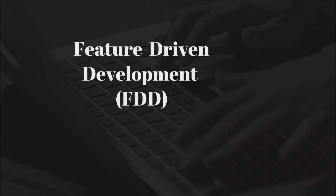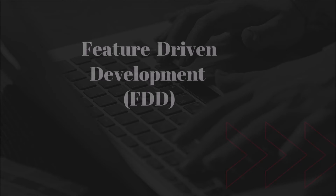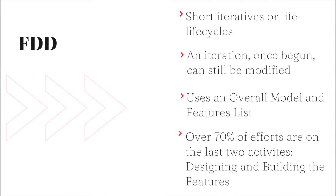Finally, we have the characteristics of FDD — Feature Driven Development. Feature Driven Development has short iteratives which are similar to Scrum sprints. However, with this framework, an iteration, once begun, can still be modified. With FDD, an overall model and features list are developed at the onset of the project. Teams then break off to work on their assigned features, and over 70% of efforts are on the last two activities: designing and building the features.